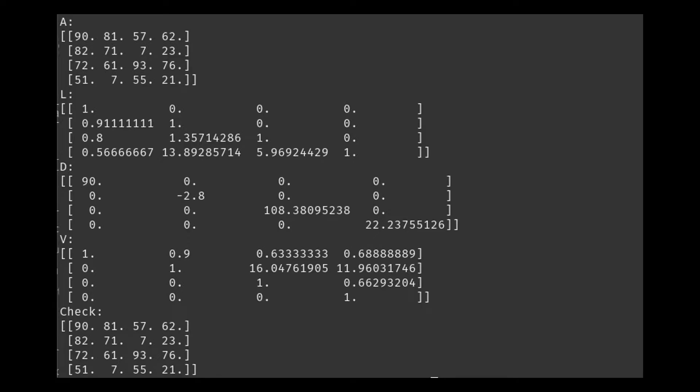Here in the terminal, you can go ahead and pause the video right now if you want to check these values. But I seem to think that they're looking pretty good between A and the check. And here, you can see our lower triangular matrix, our diagonal matrix, and our modified upper triangular matrix.